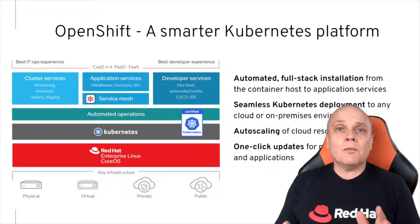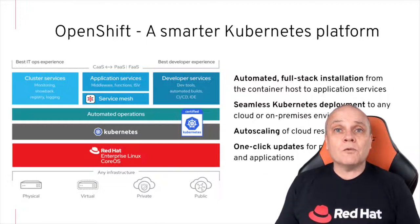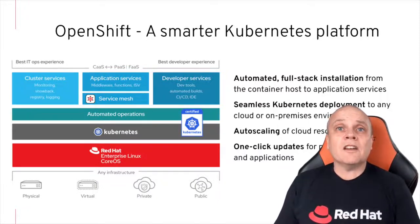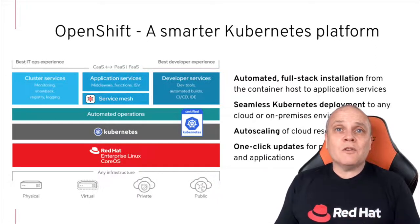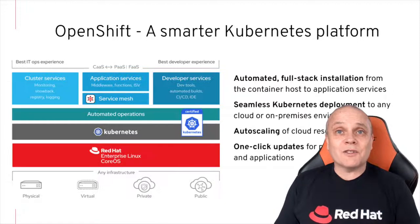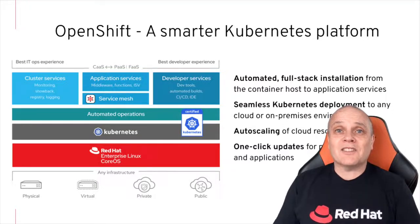OpenShift Service Mesh is one of a number of operators such as CI/CD pipelines and serverless that come bundled with all OpenShift subscriptions, meaning that you can have peace of mind that these operators will run out of the box, are pre-validated to work with OpenShift, and fully supported. For any of you that have tried spinning up your own Kubernetes platform along with operators such as service mesh, you'll know that it's not always smooth sailing during the installation, configuration, and during subsequent updates. OpenShift helps remove this hassle for you.